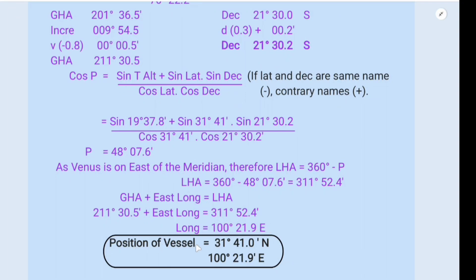Therefore the position of the vessel is 31 degrees 41.0 north, 100 degrees 21.9 minutes east.